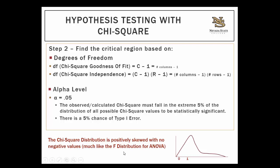The chi-square distribution looks a lot like the distribution for the F statistic for ANOVA — it's positively skewed. There's no such thing as negative values for chi-square because we're squaring values, and squaring always produces a positive number. So we don't have to worry about one- or two-tailed tests — just like ANOVA, we're testing for differences in the extreme right end of the distribution. Under the null, most values fall around one, meaning the observed matches the expected.